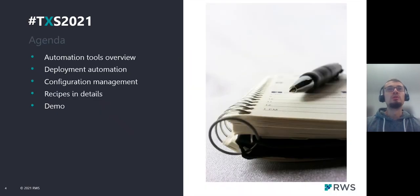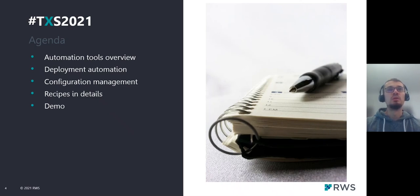This presentation will contain a description of automation tools that we are using for bootstrapping and automation of TridionDocs deployment, deployment automation itself, and configuration management — basically how we apply our custom settings and customization for the TridionDocs server — and some details about recipes. A recipe is how we distribute and apply custom settings and customer data for our servers, and also a small demo.